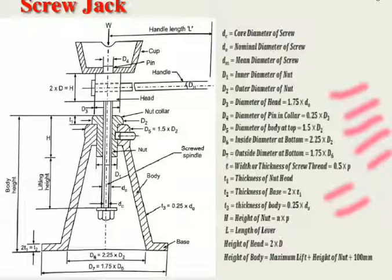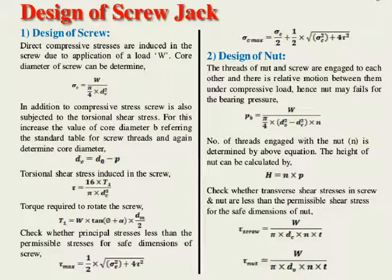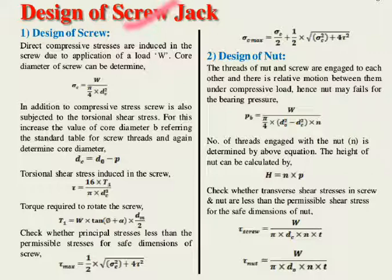Now moving to the design procedure — the steps for designing a screw jack. The first step is the design of the screw. To design the screw, we first calculate the direct compressive stress, which is induced in the screw due to the application of load W. The core diameter dc can be determined using the formula: σc = W / (π/4 × dc²).